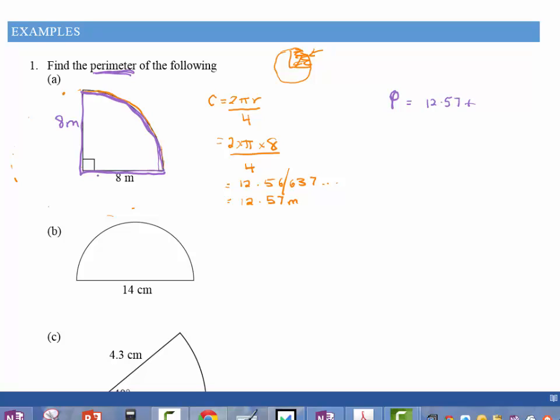is equal to 12.57, which was our curved part, plus our two other sides. So we've got another side of 8 and another side of 8 to get our final answer. So if we work this out on your calculators, you're going to get 28.57 metres.